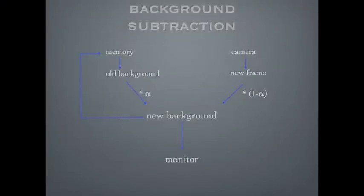So this is the algorithm of our background subtraction module. The camera keeps streaming the frames into the FPGA board, where they are processed, stored into memory and displayed on the monitor. Every time there's a new frame coming in, this module reads the previous processed background and multiplies it by a factor alpha, then adds the new frame multiplied by 1 minus alpha.